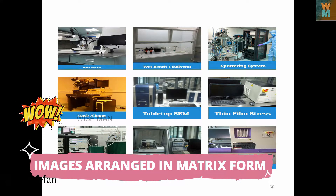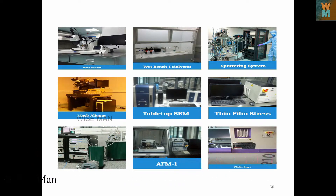Welcome to my channel Vice Man. Today I will cover how you can make a beautiful arrangement of images in a matrix form. As you can see, I have different images arranged in a three by three matrix — nine images in three columns and three rows. We need to arrange these without doing any difficult or hard work, so how can you arrange all these images smartly in a matrix or tabular form?